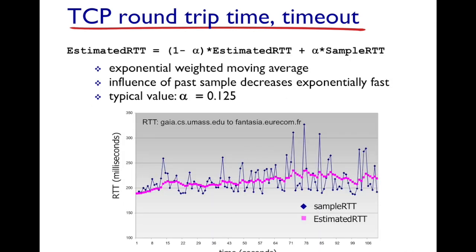We collect several measurements and average them, rather than making the timer rely solely on the current sample RTT. The way we estimate RTT is with a formula called the Exponential Weighted Moving Average. We take the current estimated RTT weighted by (1 − α), and add the current sample RTT weighted by α, where α is a value between 0 and 1.